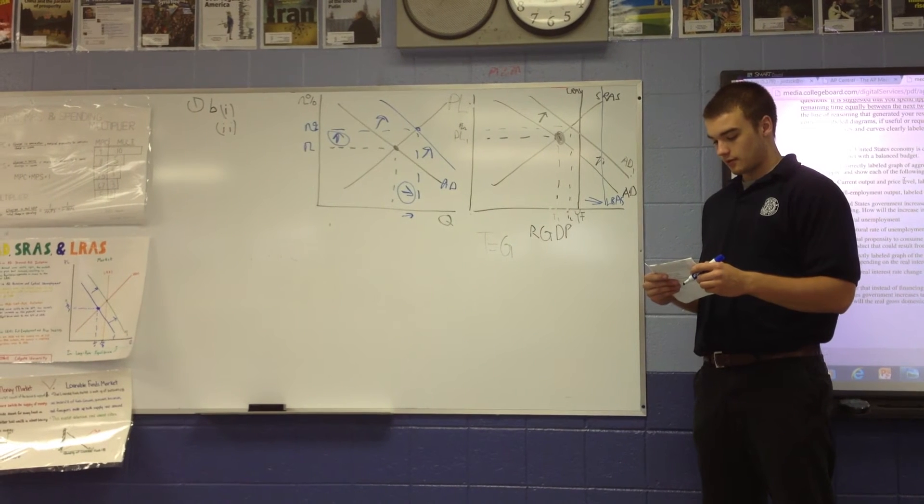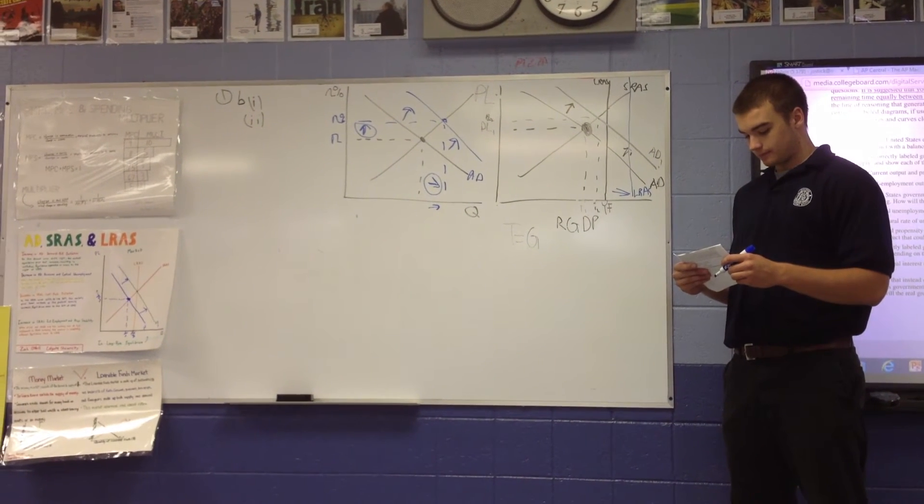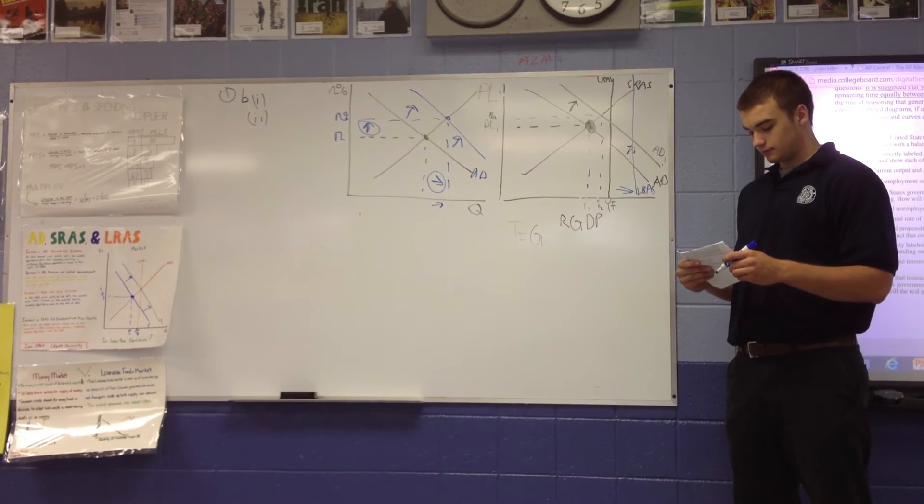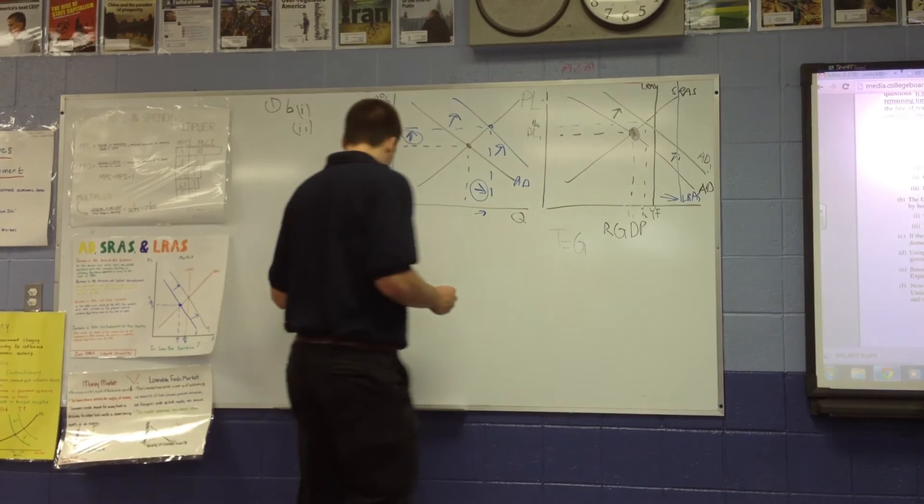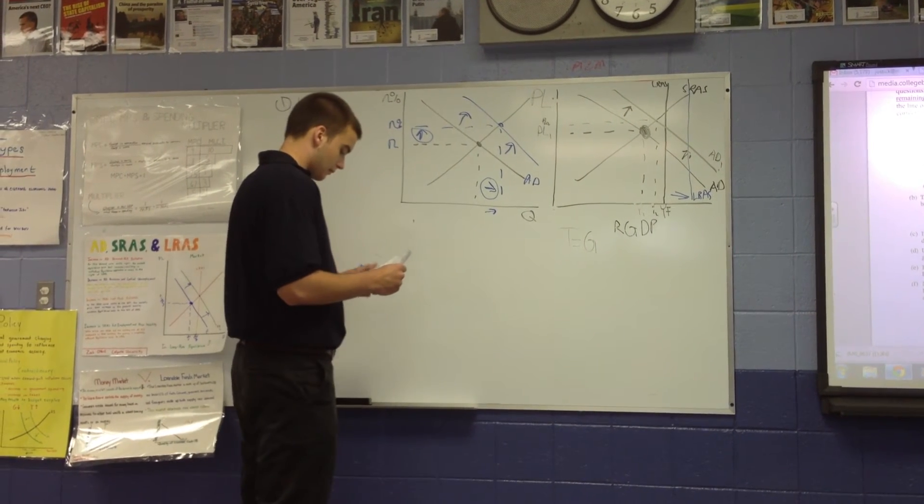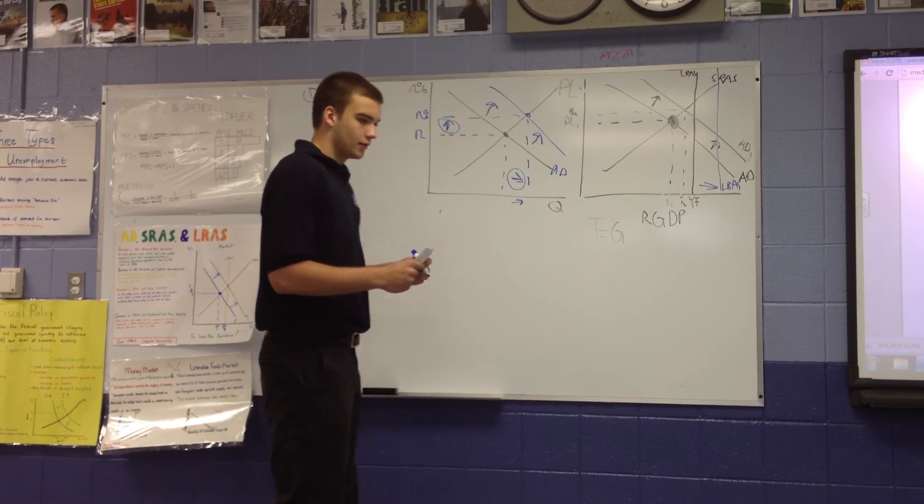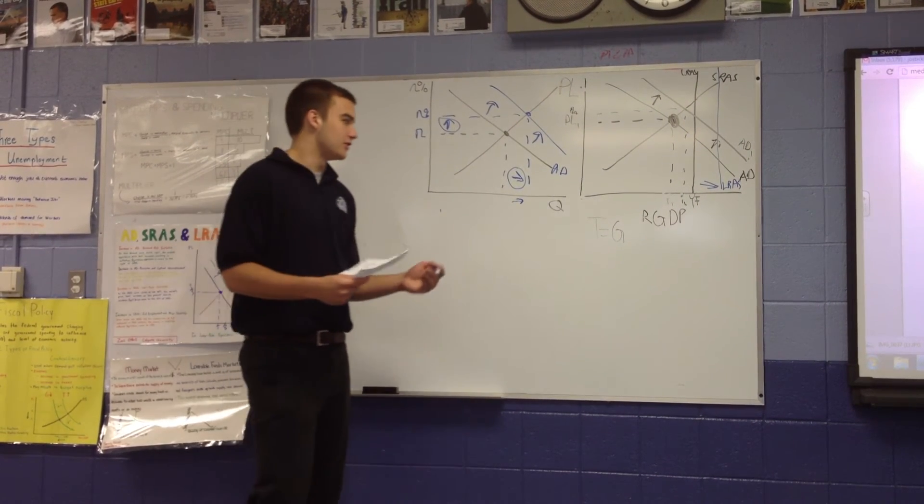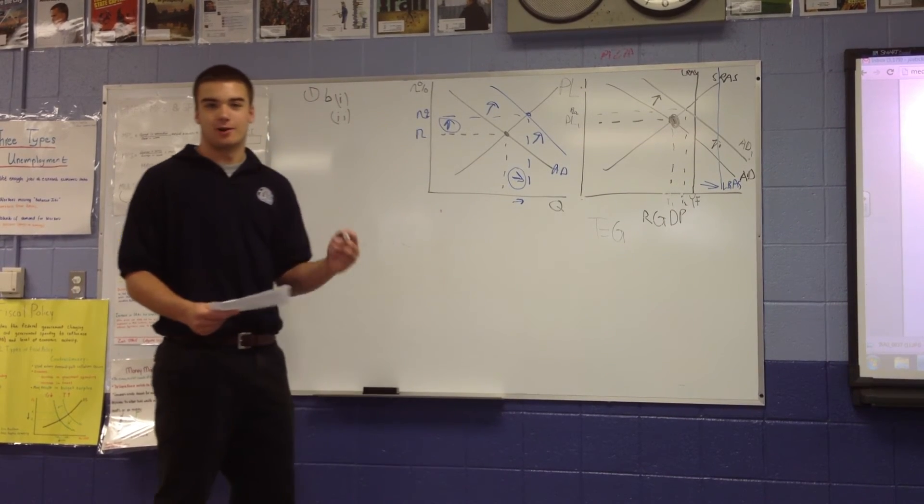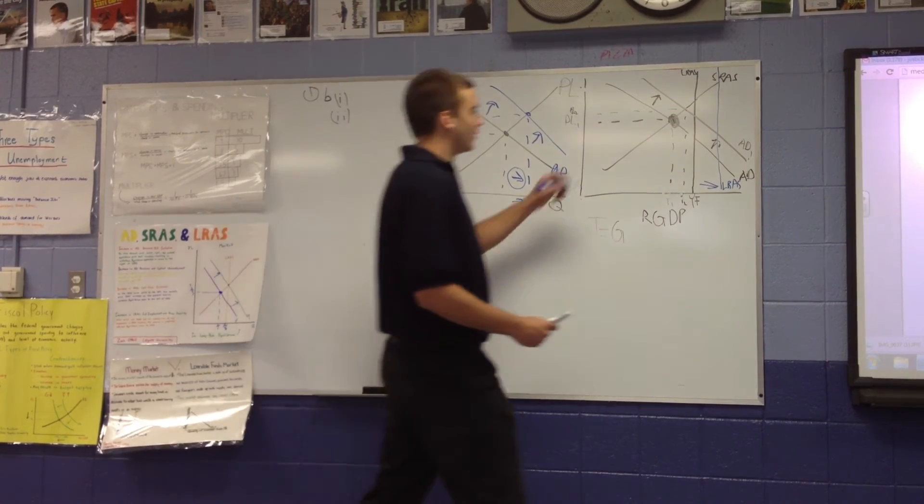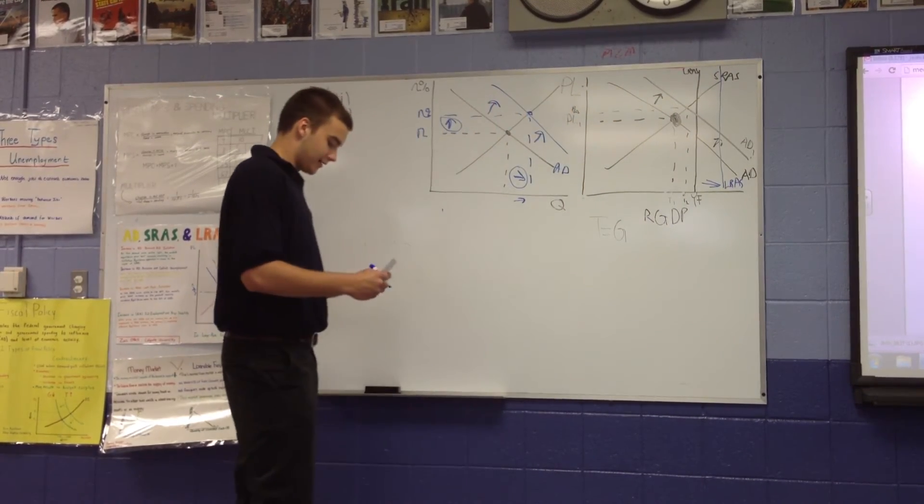Final part. Now, assume that instead of financing the $100 billion increase in government spending by borrowing, the United States government increases taxes by $100 billion. With this equal increase in government spending and taxes, will real gross domestic product increase, decrease, or remain the same? Explain. So, you'd think that GDP will go down in this scenario, but due to the balanced budget multiplier, which is one, it actually moves slightly to the right.